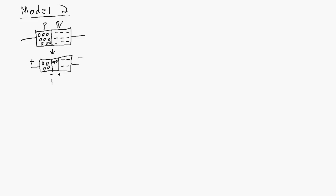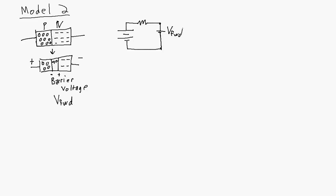So the second model is going to take into account this barrier voltage, also called the forward voltage, designated as VFWD. If we have a positive voltage applied, we model the diode with a small voltage source — the VFWD — and then a closed switch. The actual voltage across the resistor now will be whatever your source voltage is minus this forward voltage, to determine how much current is flowing in the circuit. If my voltage source is in the other orientation, it's just going to be an open circuit like previously, with no current flowing.